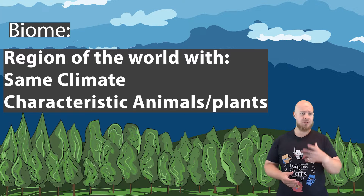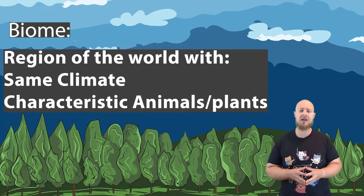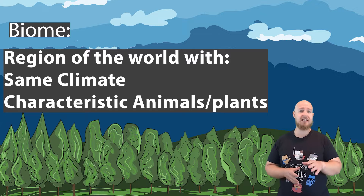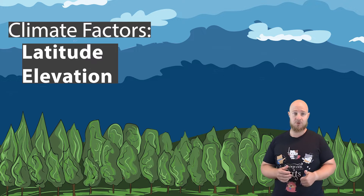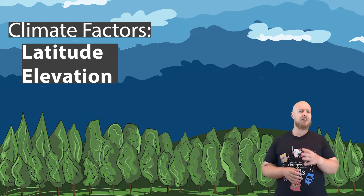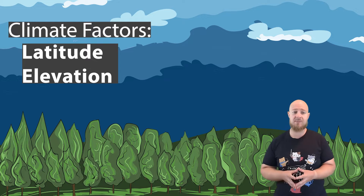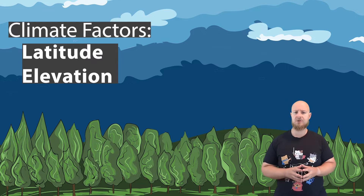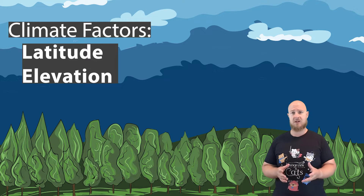A biome is a broad region defined by its climate — the pattern of temperature and precipitation seen in an area — and the plants and animals adapted to that climate. The location of a biome is primarily influenced by where certain climates form as a result of sunlight exposure, which is identical to saying distance from the equator or latitude. Elevation also plays a role, as higher elevation means less dense air and cooler temperatures. These two things explain a lot, but there are some smaller regional impacts that can influence climate.